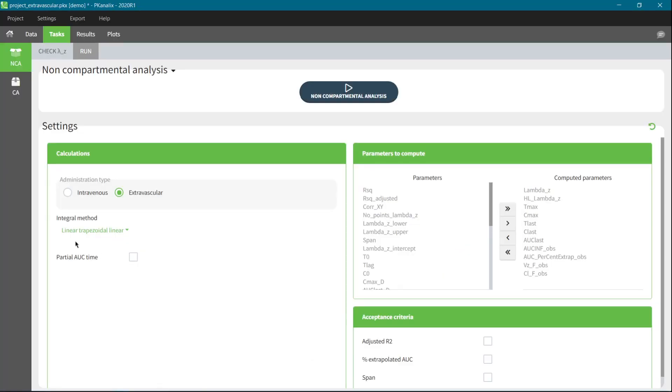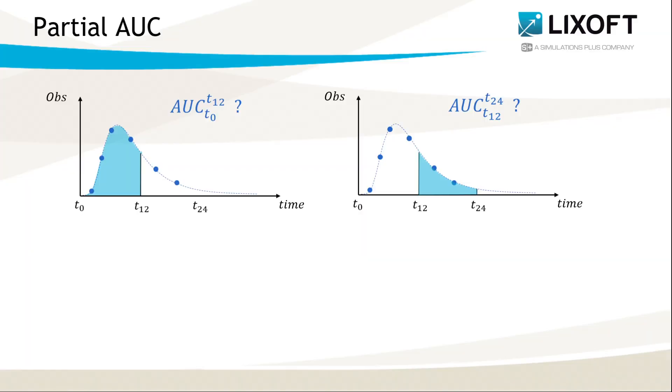In PK Analytics, it is possible to compute also partial AUC. If the time limits that you write here coincide with measurement times of the dataset, then the partial AUC is computed in the same way as AUC using the linear and logarithmic methods. However, calculation of partial AUC can be also requested at time points that are not included in the original dataset, like in these two examples.